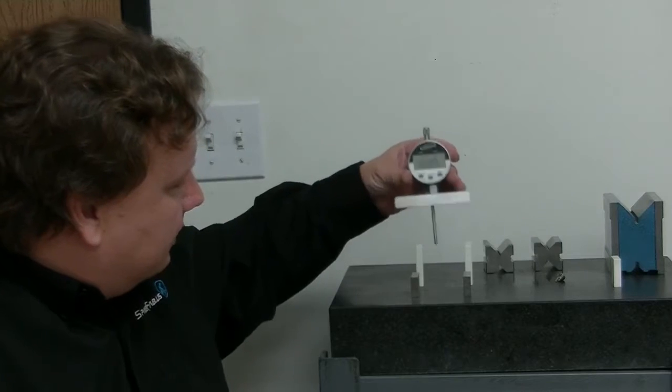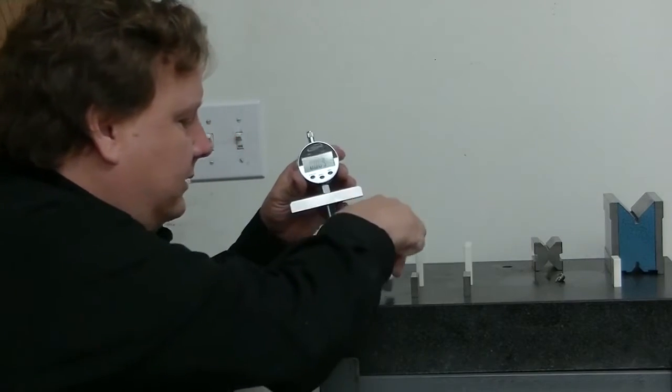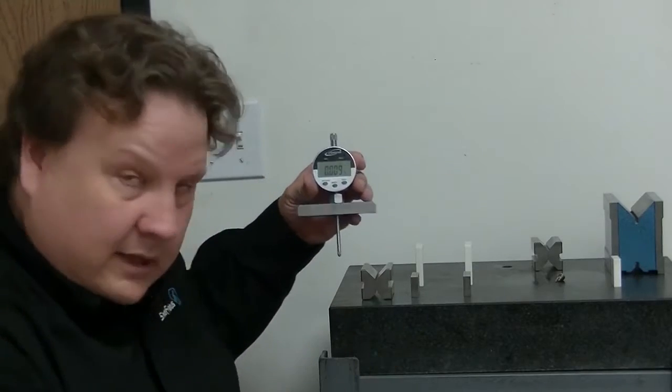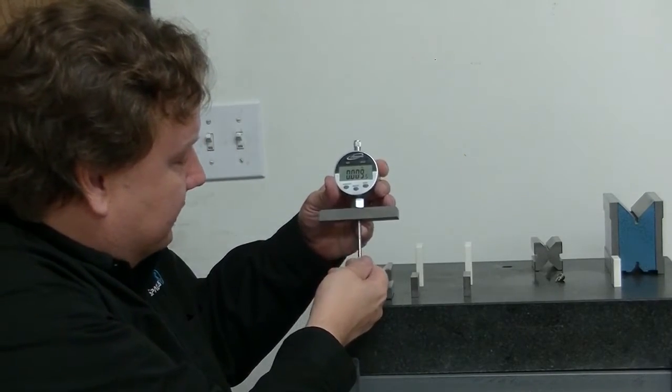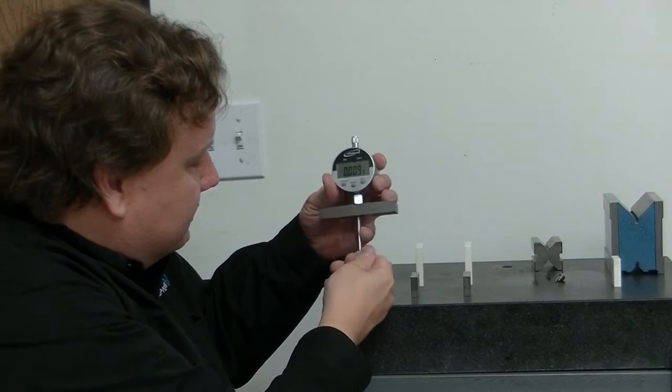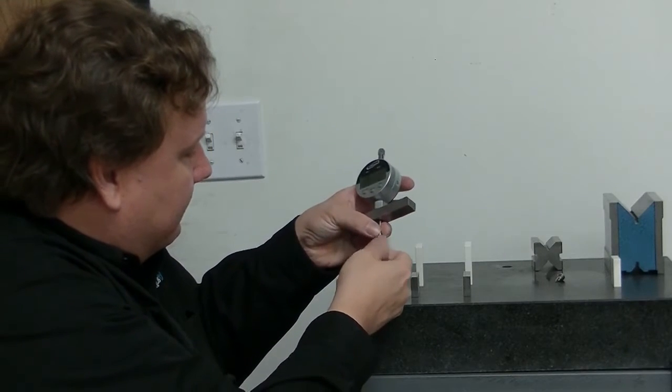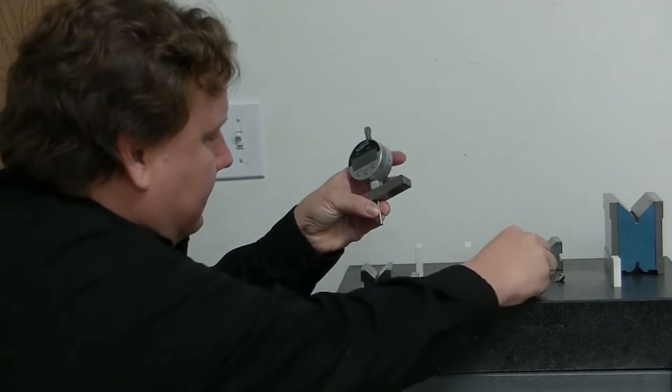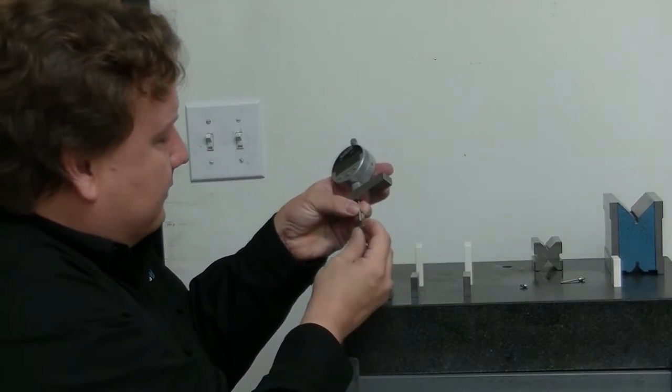Now, if you want to measure something like this block here with the edges inside, say you want to measure that edge, that would be a more difficult thing to measure. But what you can do is remove the nose piece and this kit comes with a flat piece like that, so I can thread that on.